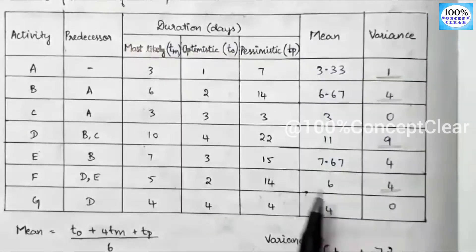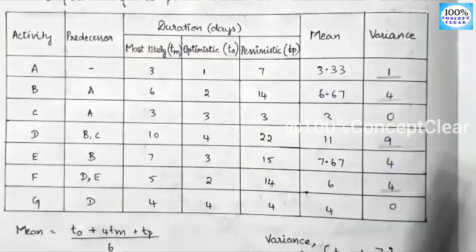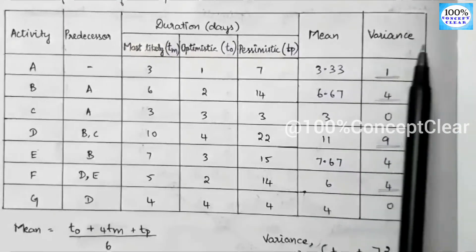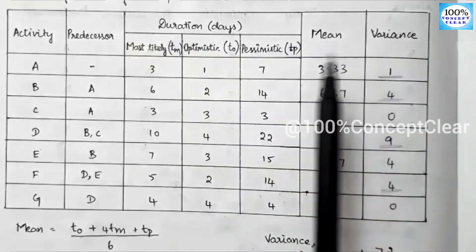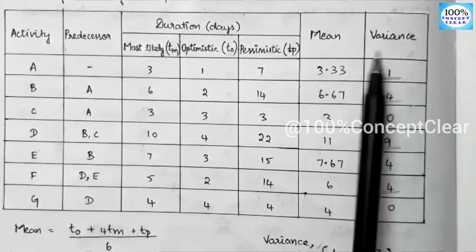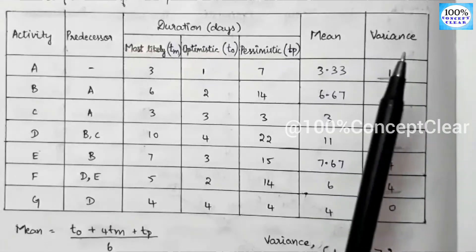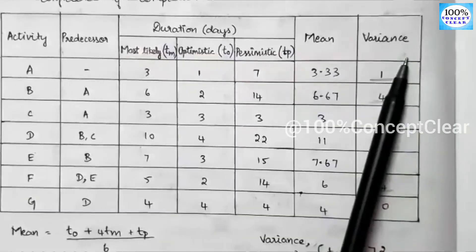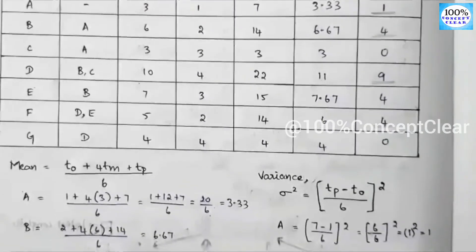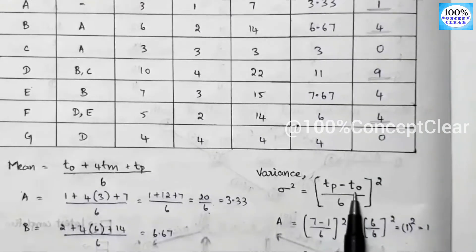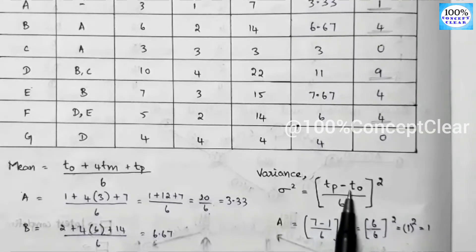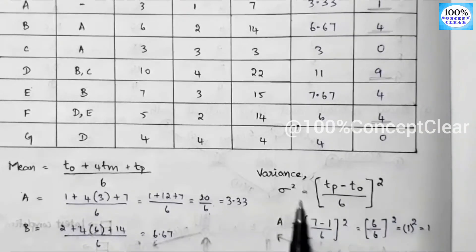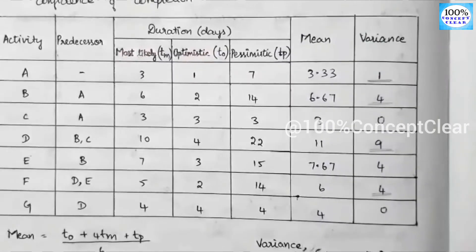We can also calculate the Variance value in PERT, which is used in network analysis or critical path probability calculations. The variance formula is: ((TP - TO) / 6)², i.e., pessimistic time minus optimistic time divided by 6, the whole squared. We calculate variance for all activities.